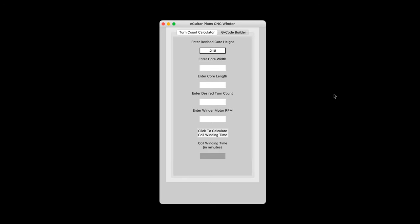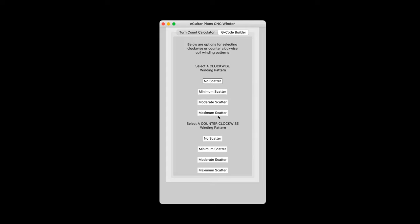Those dimensions were then input into my CNC winder software, which will generate the G-code that runs the machine. And to do it, I need to also include the turn count as well as the desired motor RPM. Then on another tab, I can select the direction that I want to wind the bobbin, clockwise or counterclockwise.